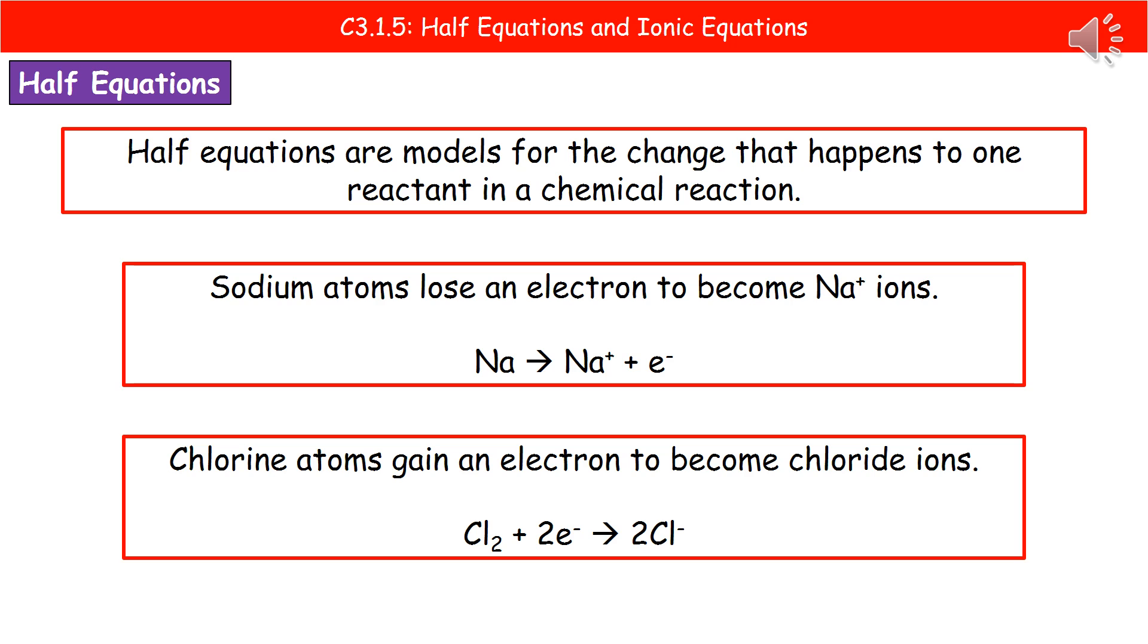What we might be asked to do next is to actually write what's called a half equation. Now, all we mean by a half equation is a model for the change that happens to one reactant. So as opposed to the balanced symbol equation, which literally looks at the whole thing, the half equation is going to focus on just one of the reactants.